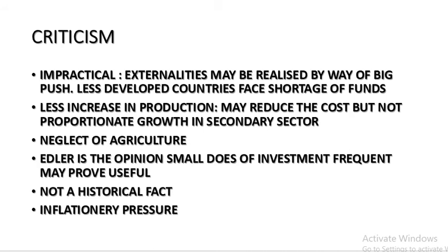Critics also note that the theory has neglected agriculture. Underdeveloped economies are heavily focused on agriculture, which should also be developed, and agriculture contributes up to 50% of national income. Some economists, like Edler, hold that small doses of investment are also useful and we could produce more by investing less. It is not a historical fact that economic development can only happen through a big push. When massive investment is made, a long gestation period means people will have income and demand more goods and services before they can be produced, creating inflationary pressure. Still, this theory is very useful because it emphasizes creating social overheads and establishing complementary industries.